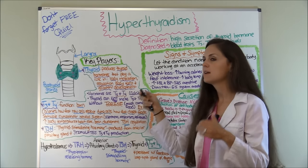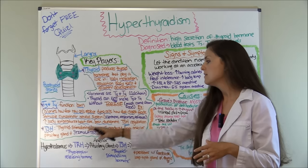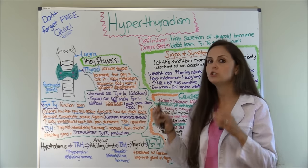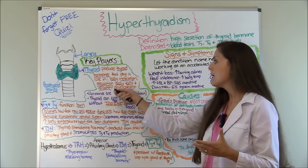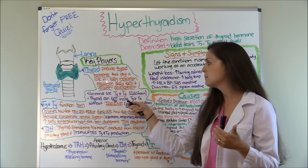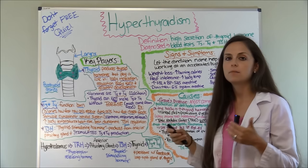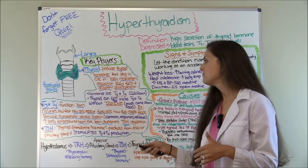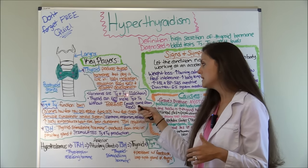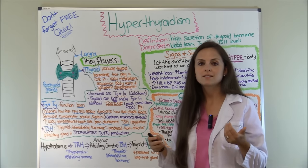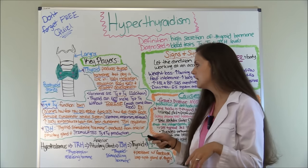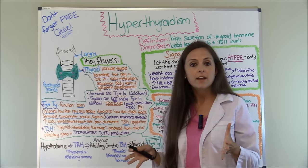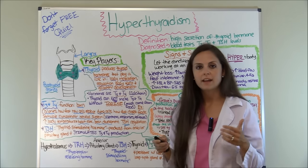Your thyroid gland produces thyroid hormones through the negative feedback loop, which we'll go over in a moment. These thyroid hormones play a huge role in how your body metabolizes, regulates temperature, and supports growth and development — especially in pediatric children, who need good thyroid levels for brain development. These hormones are known as T3 and T4. The thyroid also produces calcitonin, but in hyperthyroidism, T3 will be really elevated, and T4 can also be elevated.